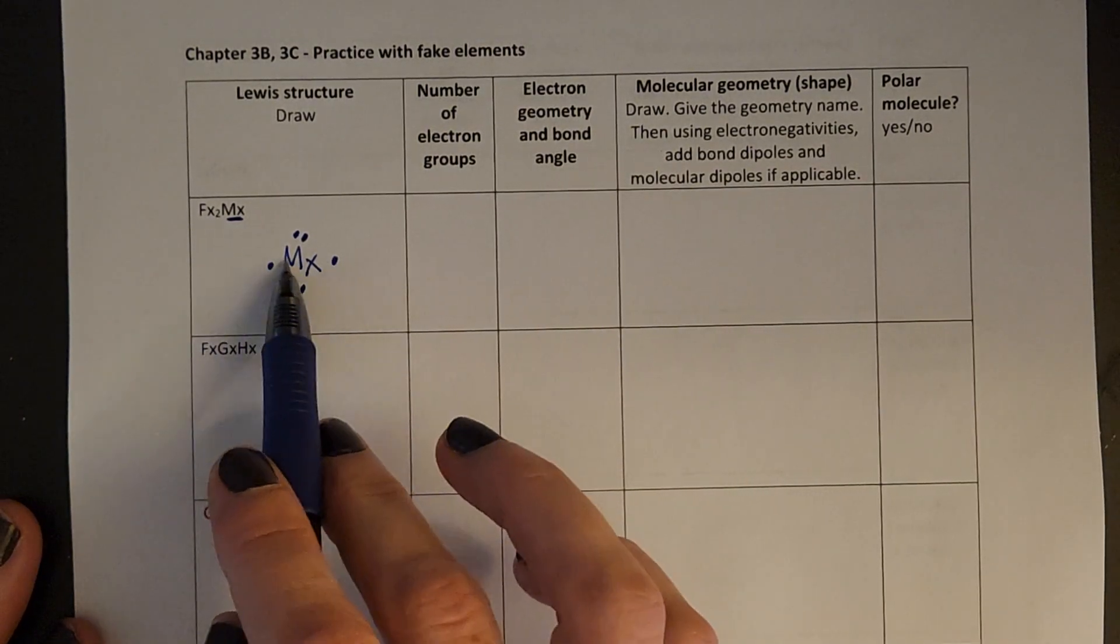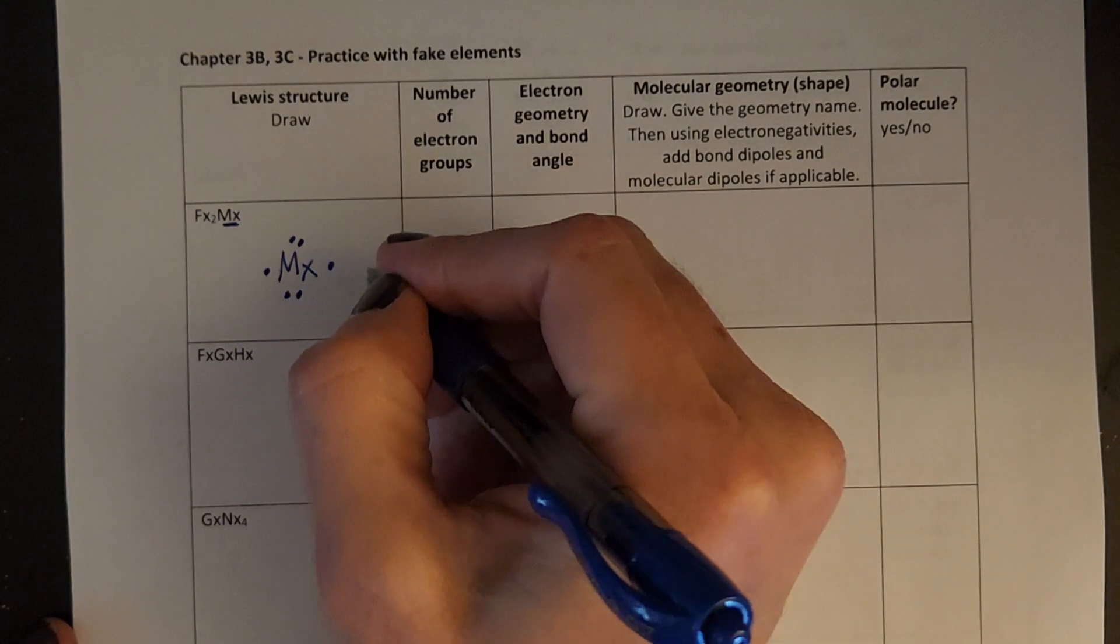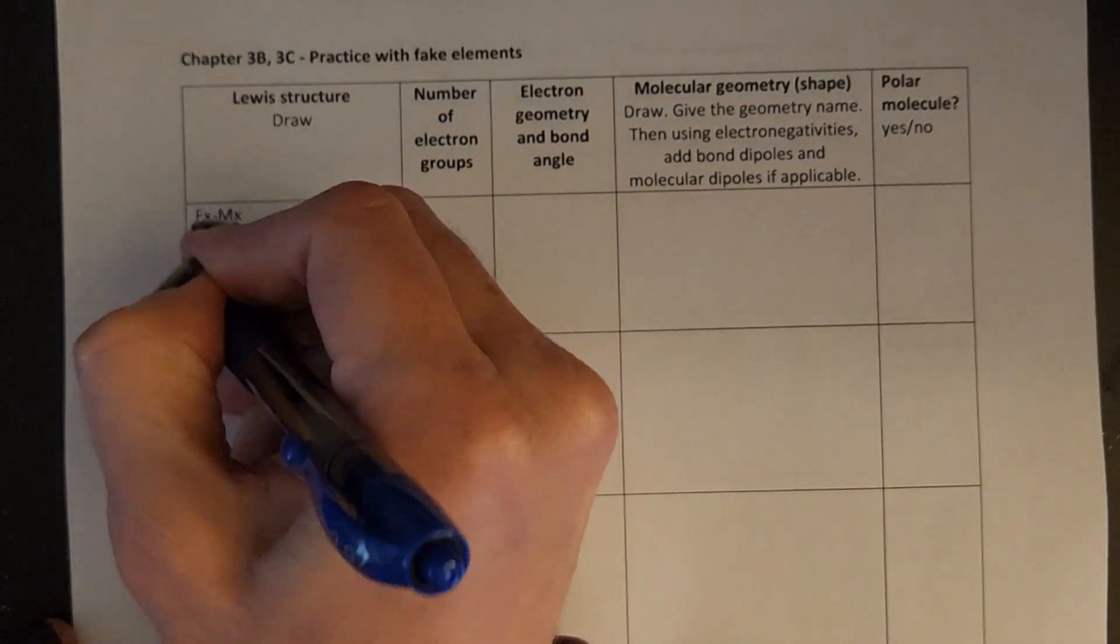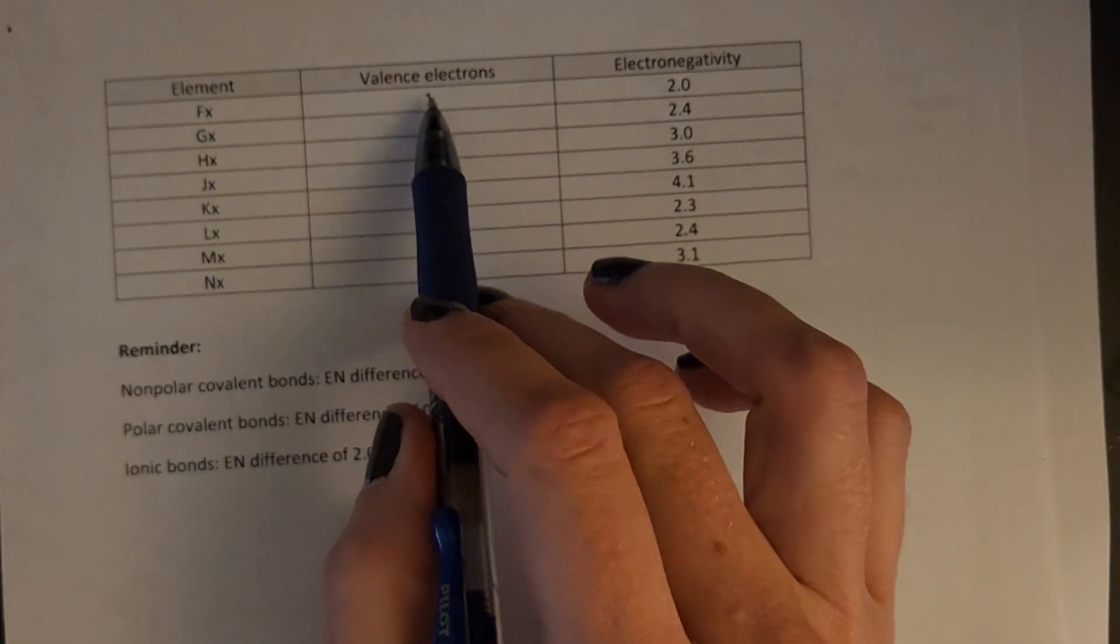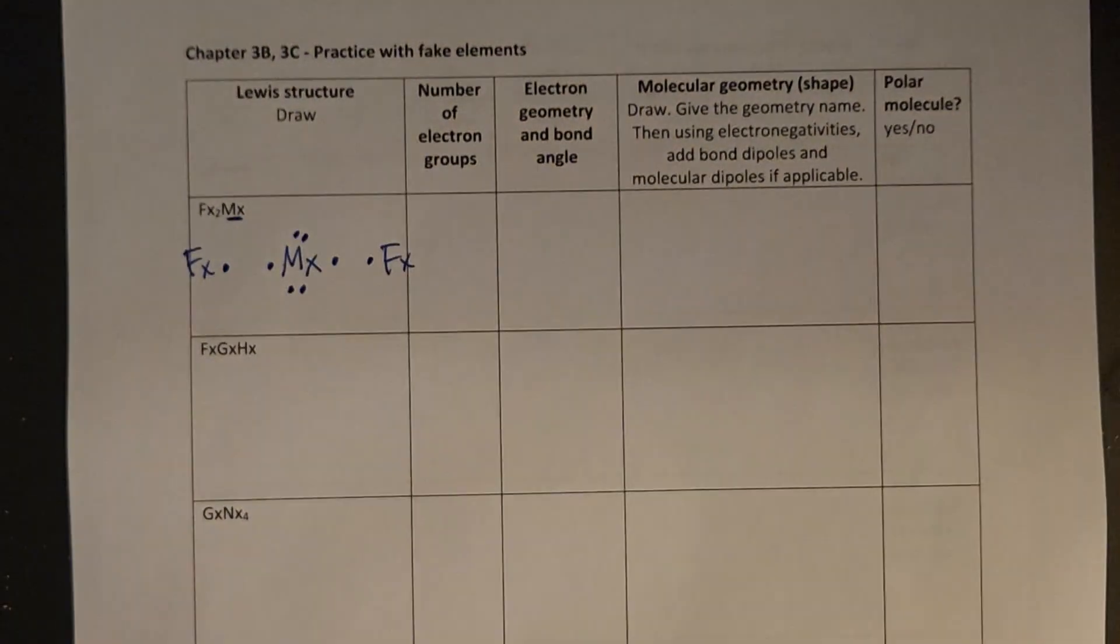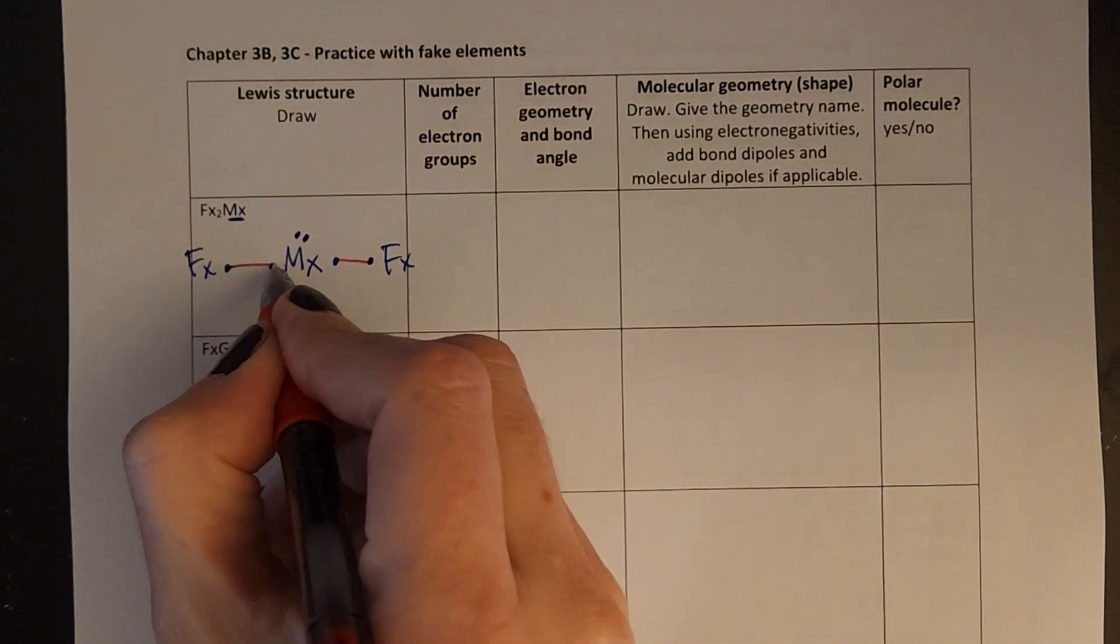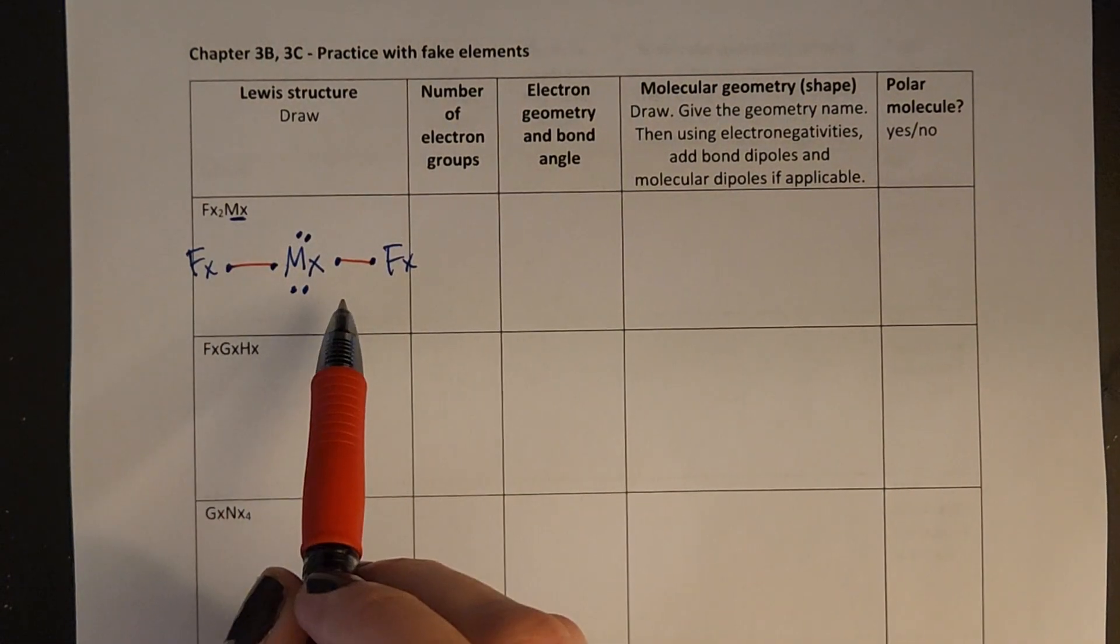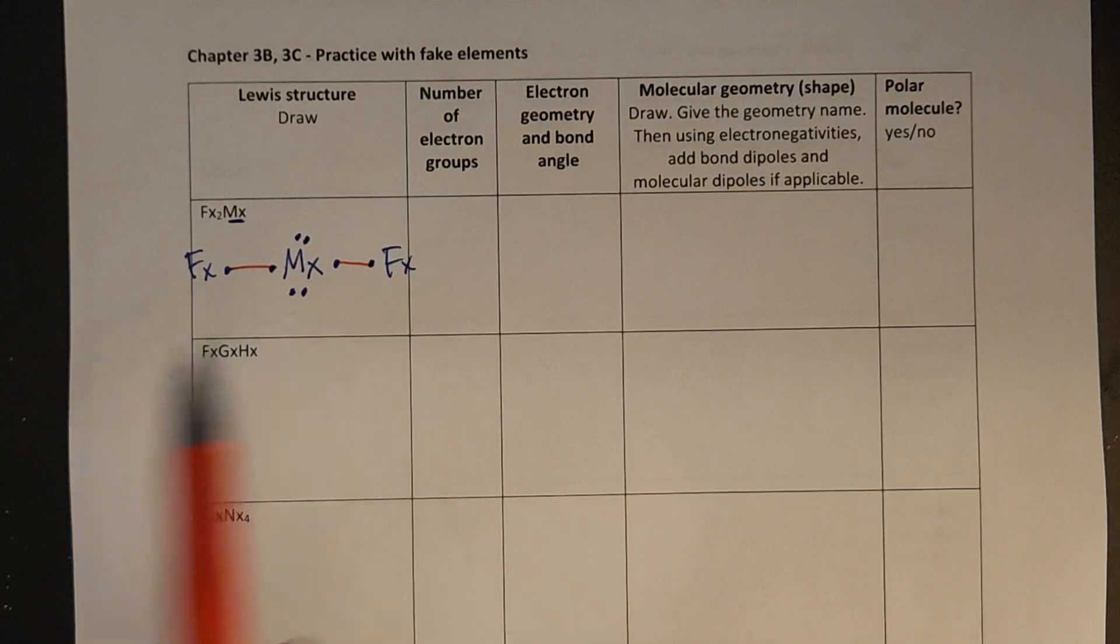Remember, it helps you in the future if you keep those unpaired electrons kind of in a position where they can bond. And then I've got fx, I want to have some symmetry. And fx has one valence electron, so I'm going to put that right here. Form single bonds. Check. Are there any unpaired electrons? There's not. So that means that my Lewis structure is done and good.